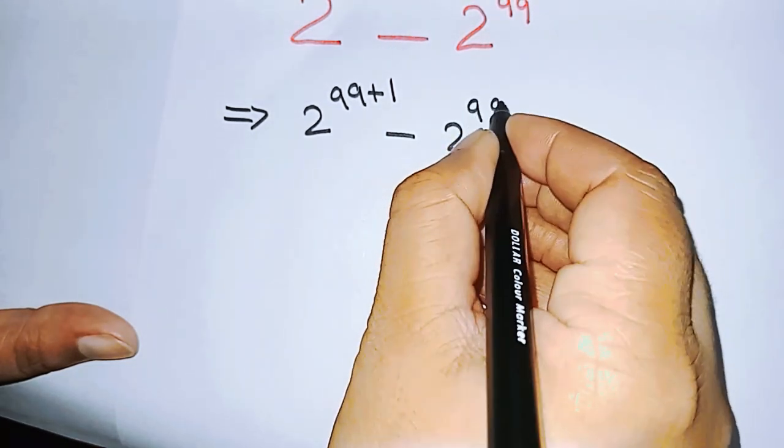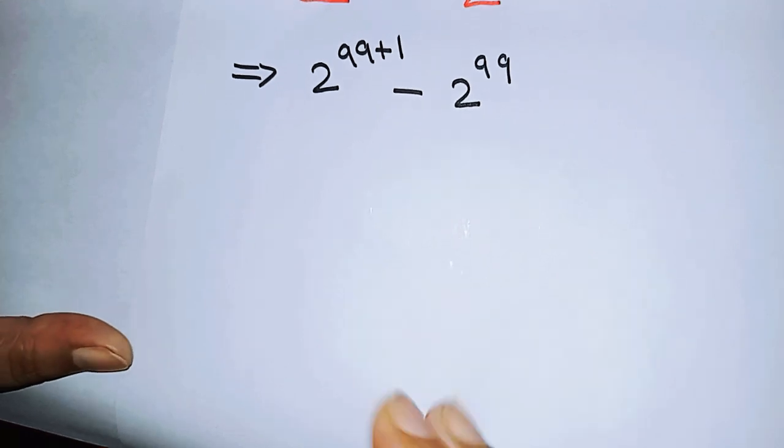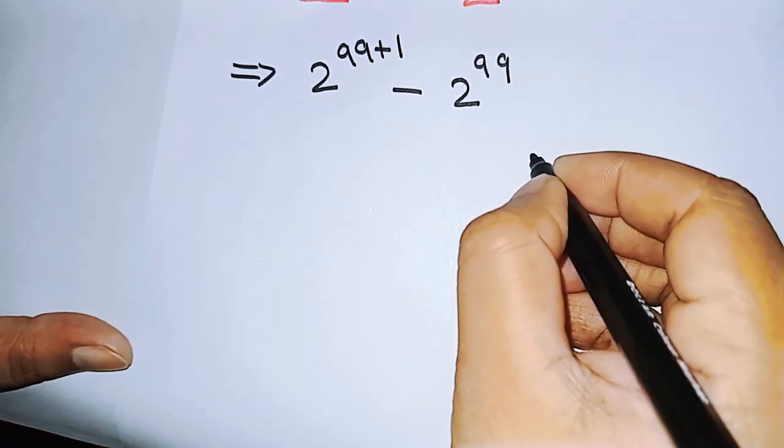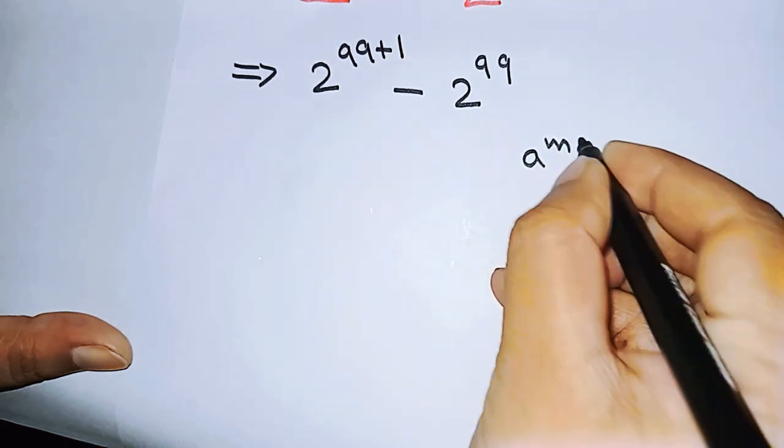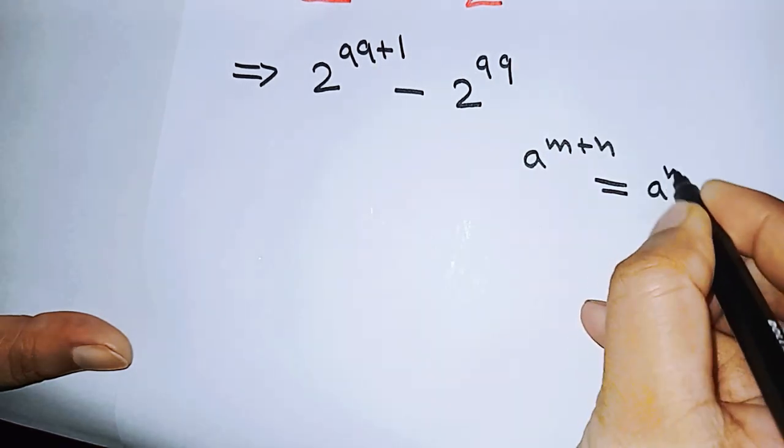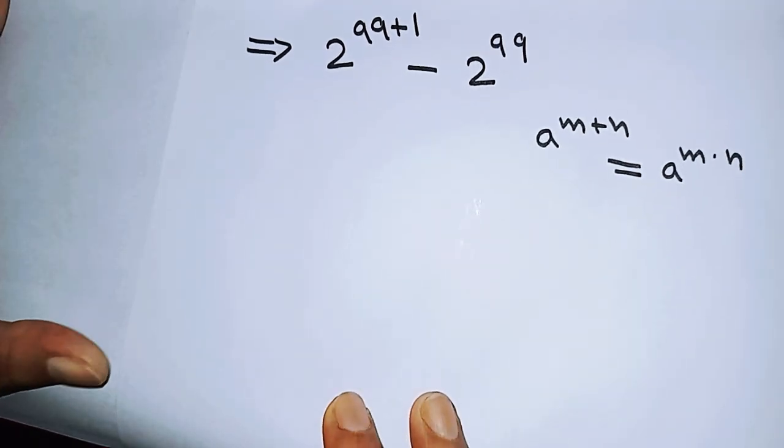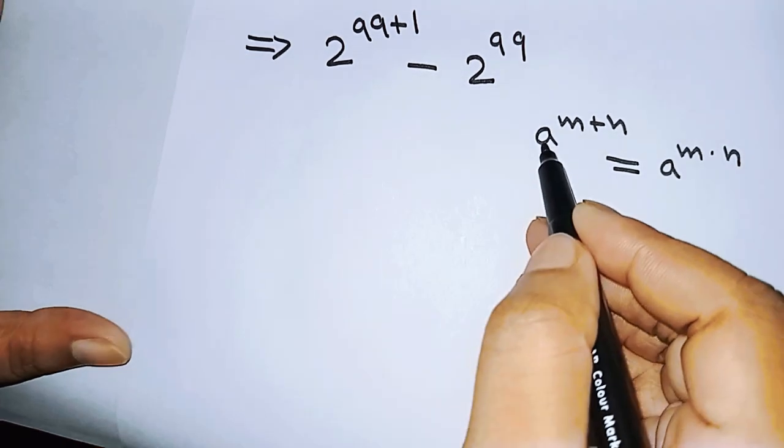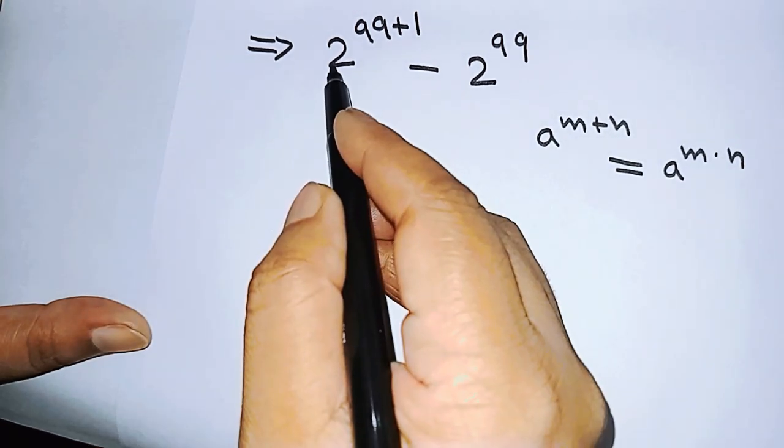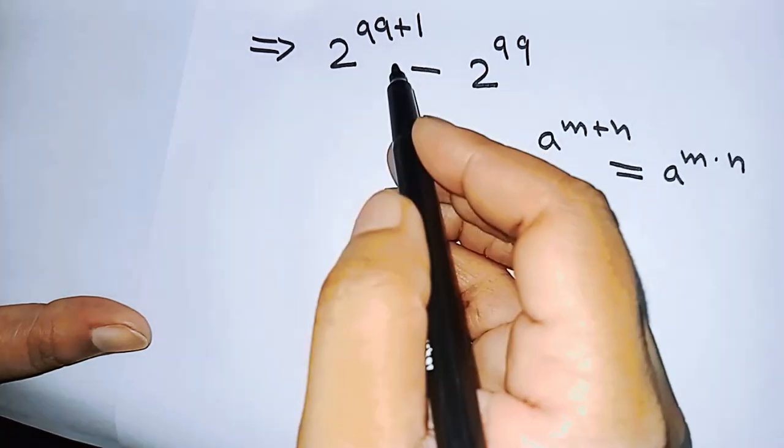And here this is in the form of a formula: a power of m plus n is equal to a power of m into n. And here, a is 2, and m is 99, and n is 1.